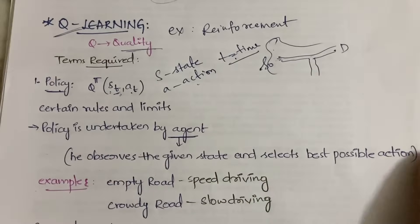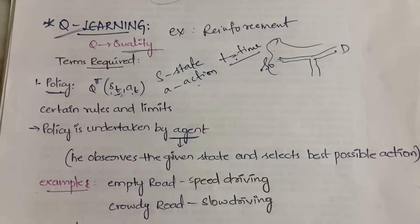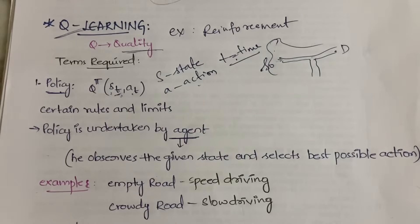The relationship between state and action will be clearer when we look at the Q-table, where you have states and actions in rows and columns. For example, in a cricket game where you have one ball left and need to score six runs: your state is 'one ball, six runs needed,' and your action is to hit a six or a boundary in order to win the game. That is the relationship between state and action.